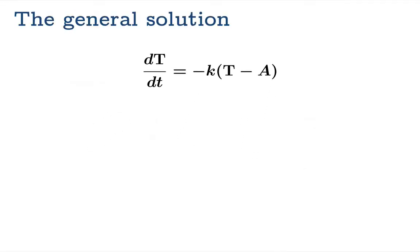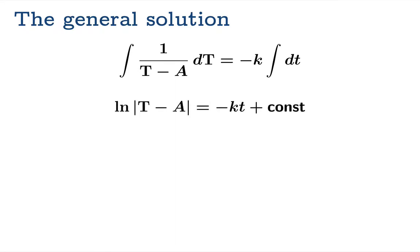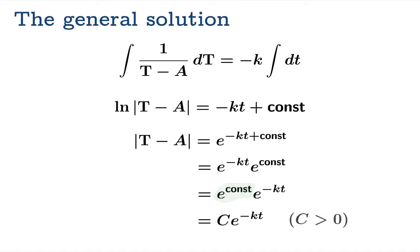Now this is a separable equation, so let's separate the variables and integrate. The integral of the left side is ln of absolute value of temperature minus ambient temperature, and the integral of the right side is simply negative kt plus a constant of integration. We're going to exponentiate both sides and recall a law of exponents that allows us to rewrite the right side this way, and then we're just going to put e to the constant out front. Now this quantity right here is e to the something, and therefore is some positive quantity. So let's just rewrite this. We'll call it C, e to the negative kt, and notice that C must be positive.